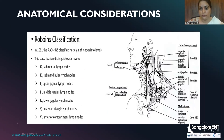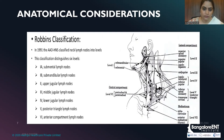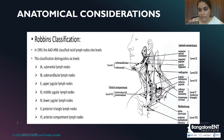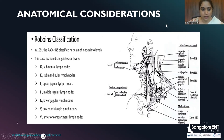This classification divides the neck into lateral compartments: levels 1, 2a, 2b, 3, 4, and 5. The central compartment is level 6 — pre-tracheal and paratracheal. Level 7 is the mediastinal group, including infraclavicular and anterior mediastinal or thymic group lymph nodes.